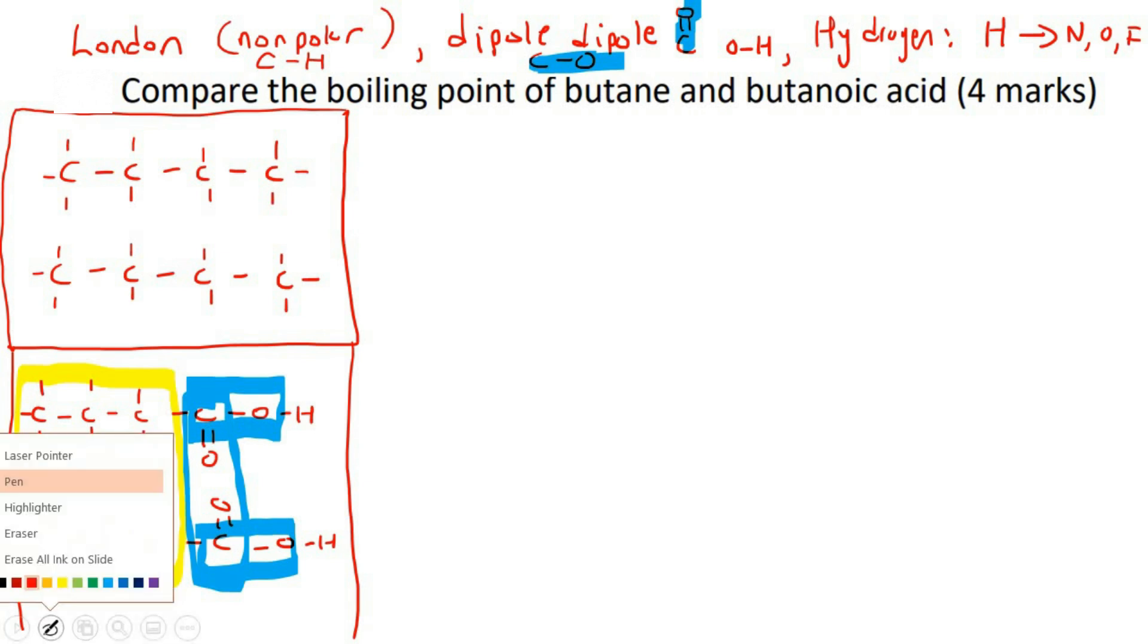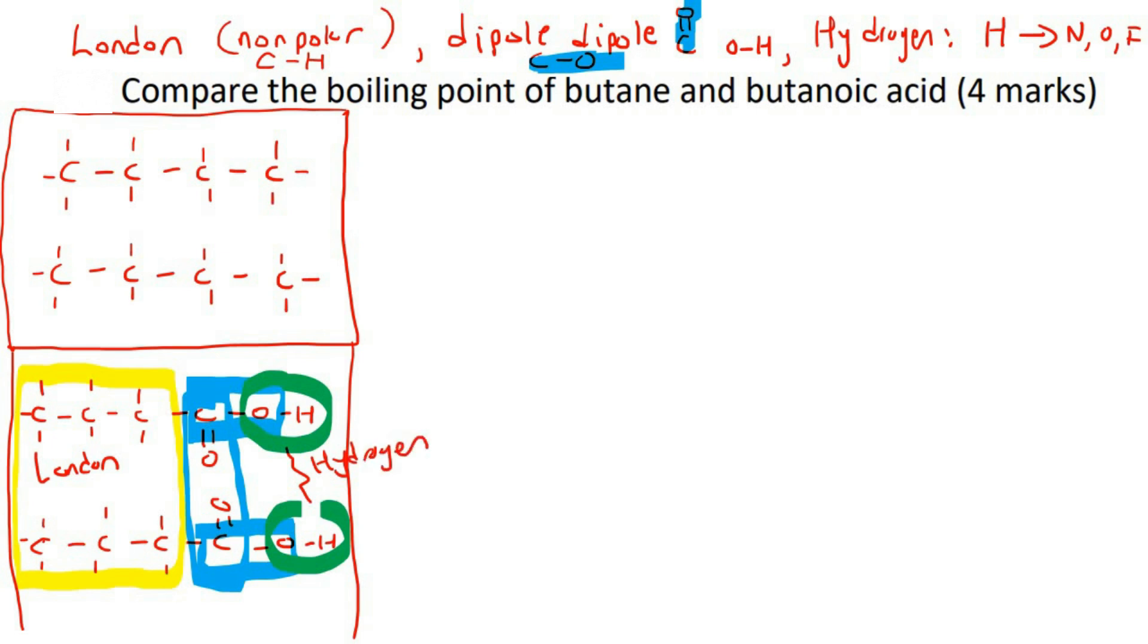And then when you've got OHs like that, then in between there, you're going to get some hydrogen bonding. This blue part, that was your dipole-dipole. So you see that carboxylic acids have a little bit of everything. So the forces in between the carboxylic acid will end up being much stronger than the forces in between the butane.